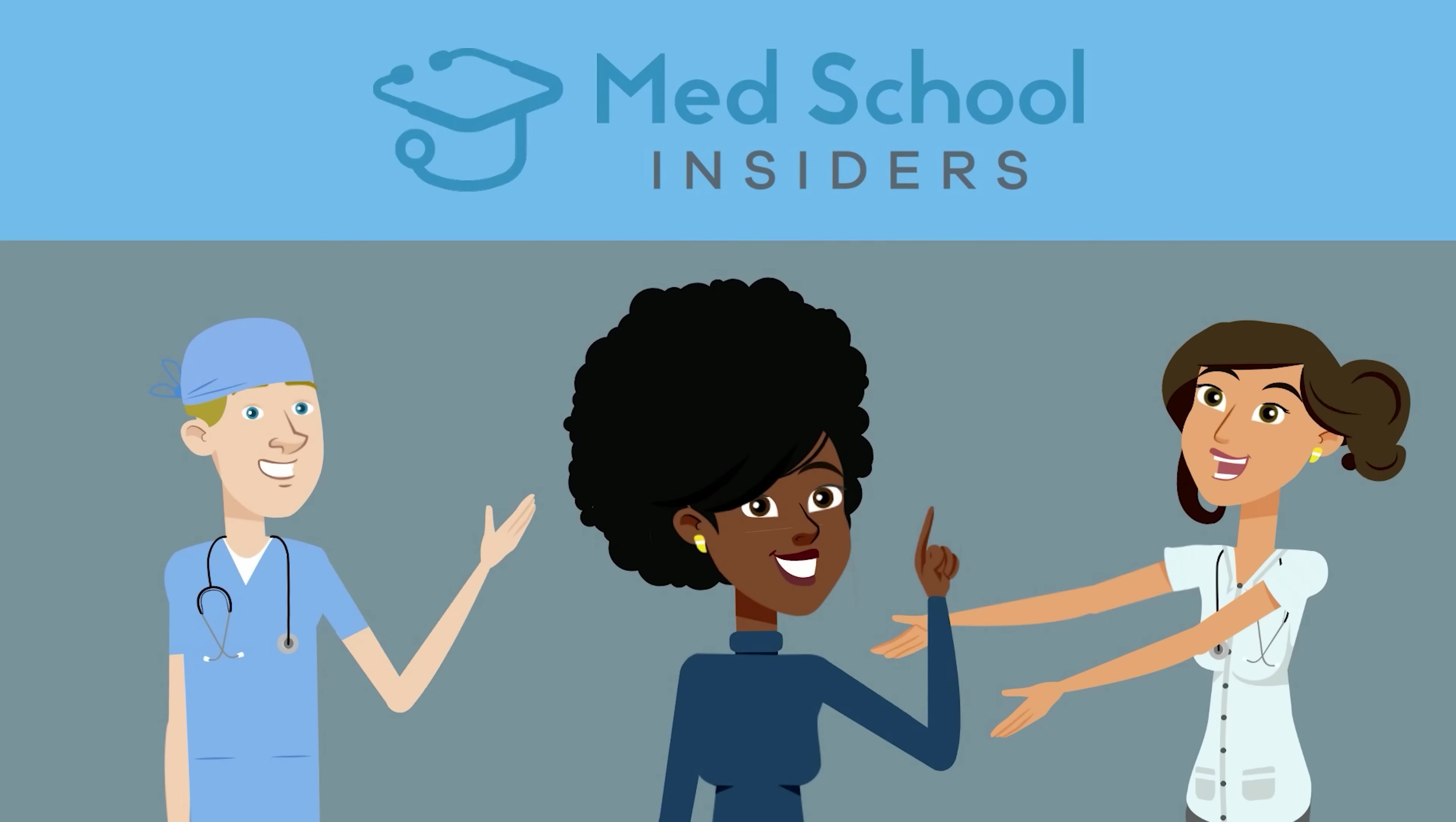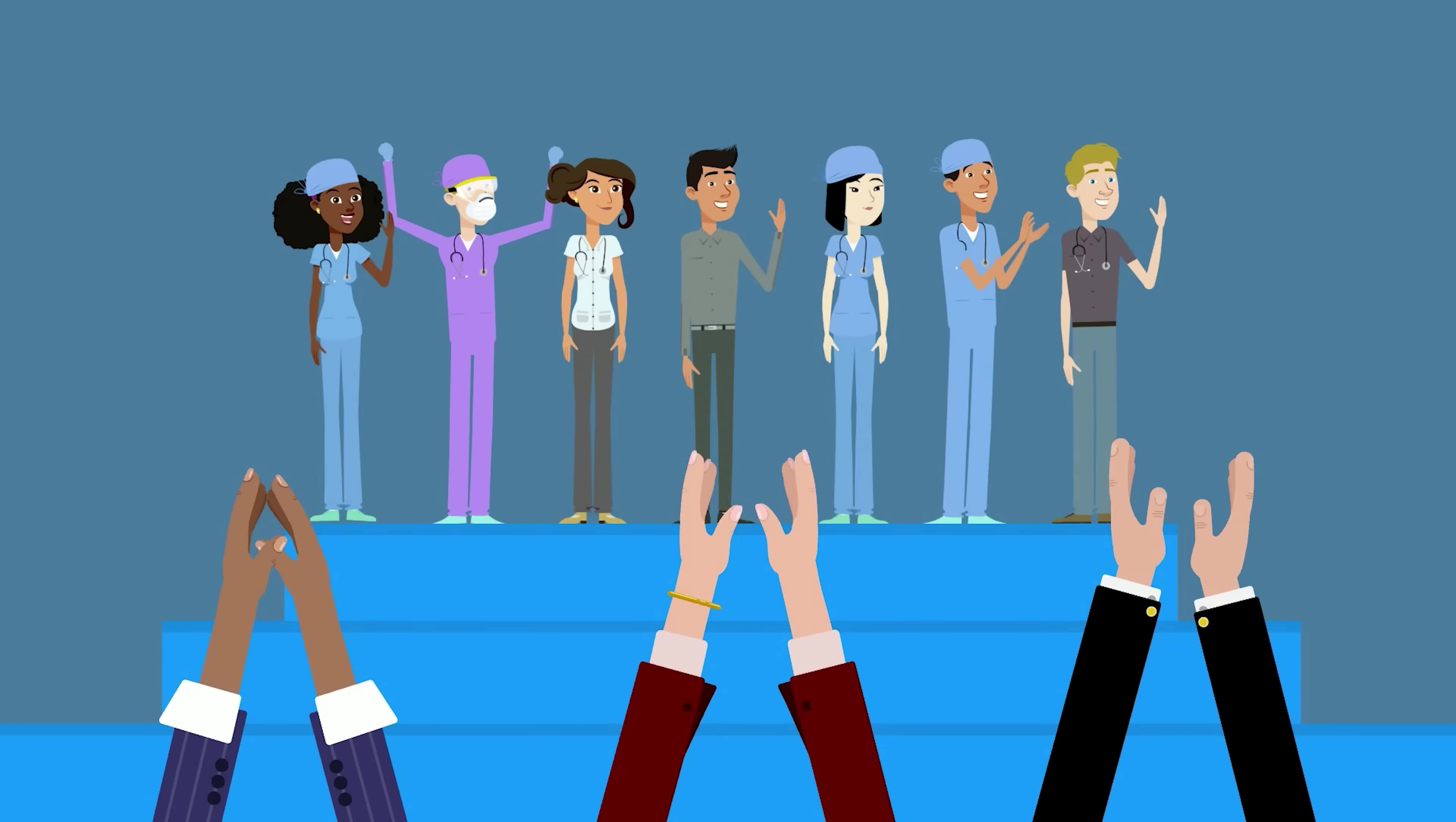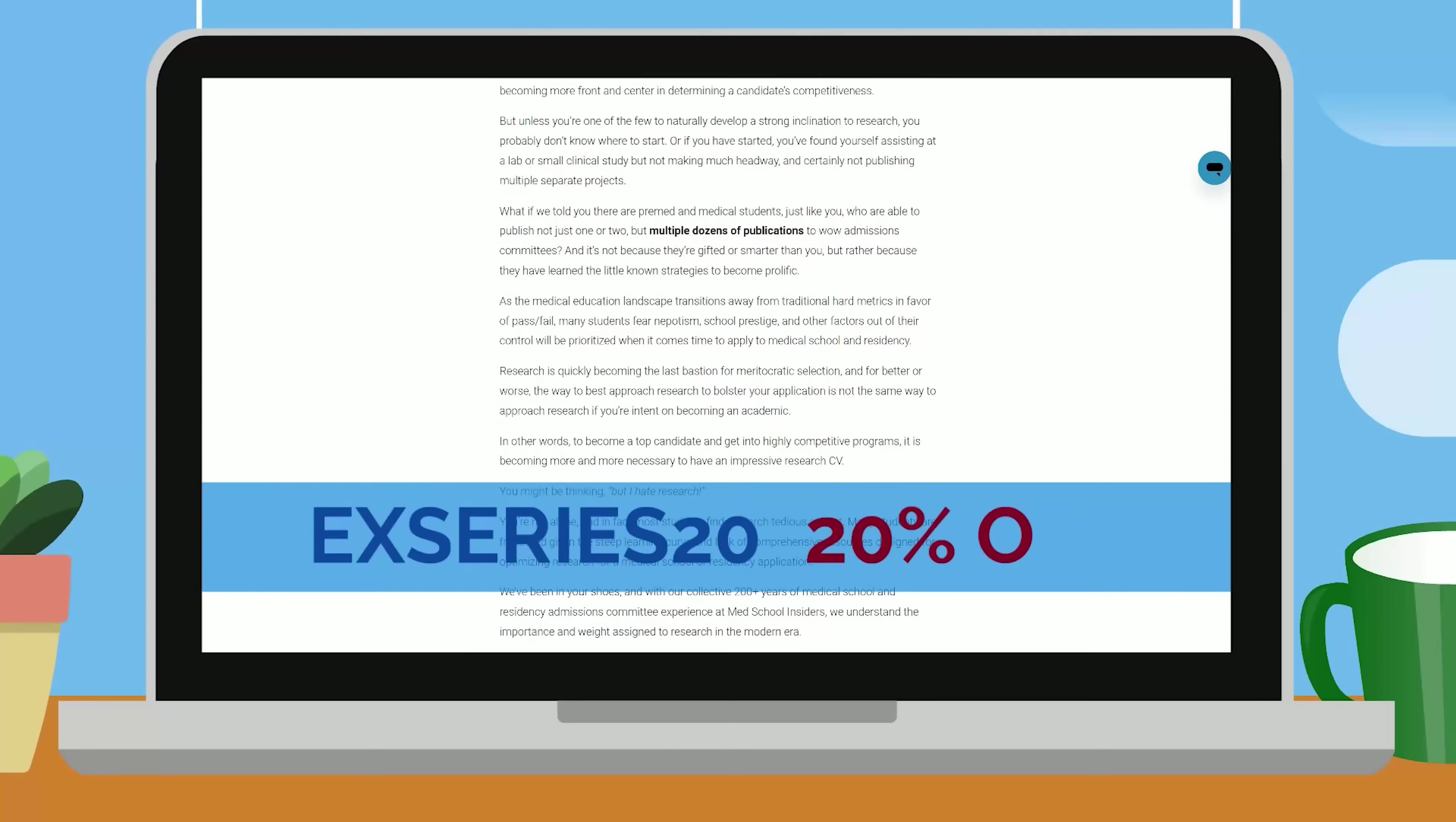We've distilled how to become a research superstar into a stepwise and repeatable process. These are the tactics and lessons we've learned from earning more than 60 research items each. No, you didn't hear that wrong. The team behind the research course, including yours truly, each have more than 60 publications, abstracts, and presentations to our names, which has consistently wowed admissions committees. Find a link to the Ultimate Pre-Med and Medical Student Research Course in the description to learn more. For the next 30 days, use coupon code EXSERIES20 for 20% off the course.